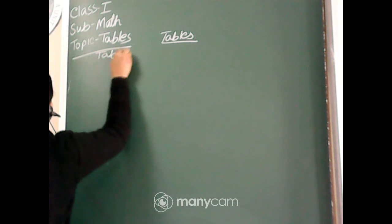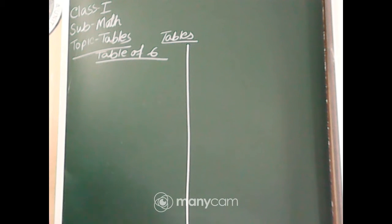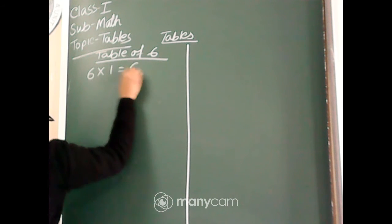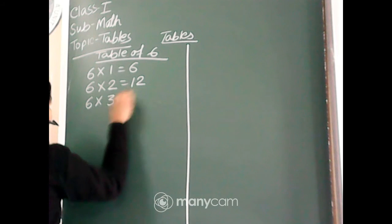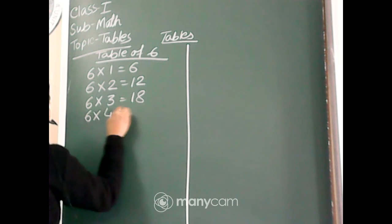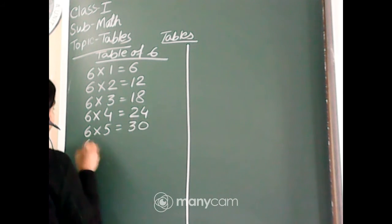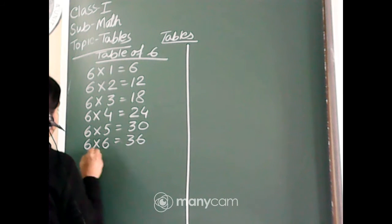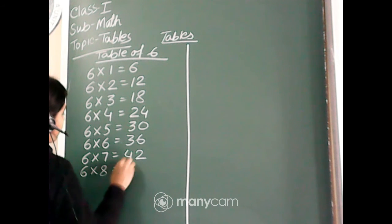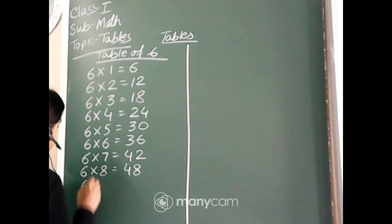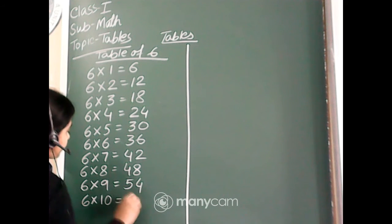First, table of 6. Let's start now. 6 ones is 6. 6 twos are 12. 6 threes are 18. 6 fours are 24. 6 fives are 30. 6 sixes are 36. 6 sevens are 42. 6 eights are 48. 6 nines are 54. 6 tens are 60.